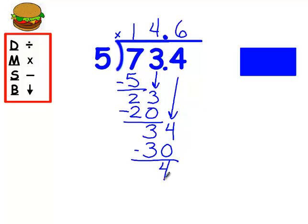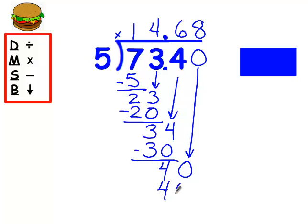You cannot have a remainder when there's a decimal point in your answer. I have to add a zero and then drop it down. How many groups of five out of forty? Eight. Eight times five is forty, and I'm done. Notice that for every number in my dividend, I have a number in my quotient, or my answer. The answer is fourteen and sixty-eight hundredths. You're done.